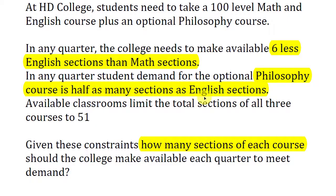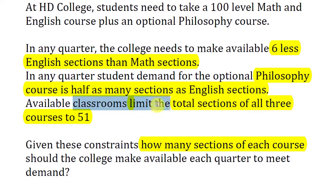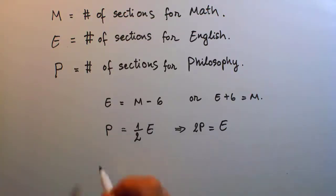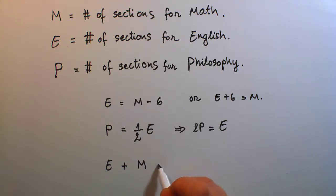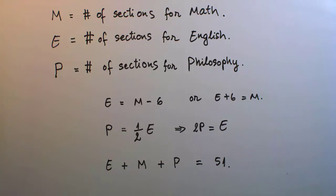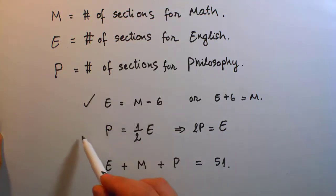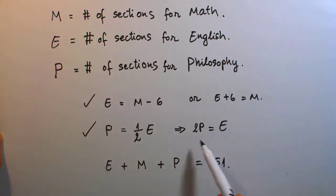For the third relationship: available classrooms limit the total sections of all three courses to 51. That means all three — English, math, and philosophy sections — total together to 51 sections. So we have three variables, three unknowns, and three relationships: E equals M minus 6; P equals one-half E, or more conveniently two P equals E; and E plus M plus P must equal 51.